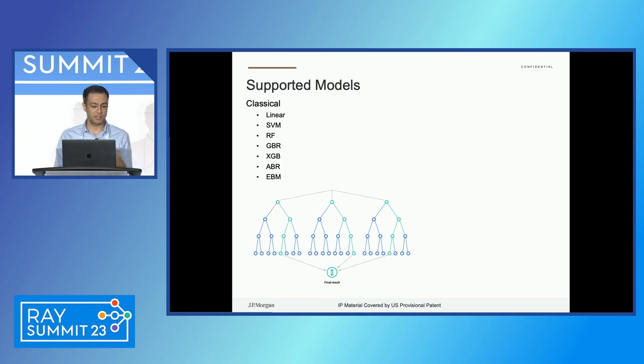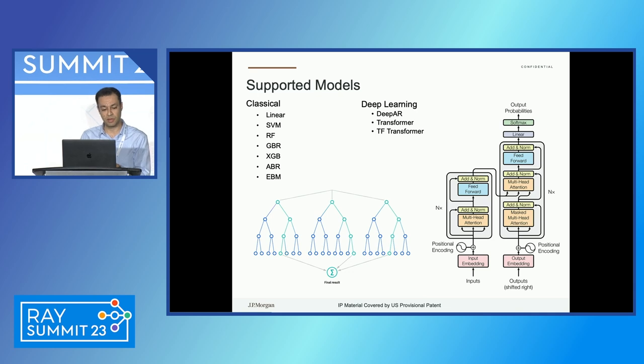The package that we have supports both classical and modern machine learning algorithms. The classical ones, it is not a comprehensive list because the user can also define their own models, but to name a few: linear model, support vector machine, almost the whole family of trees, random forest, XGBoost, and so on. From the deep learning perspective, right now by default, the package supports deep autoregression and vanilla transformer and temporal fusion transformer.